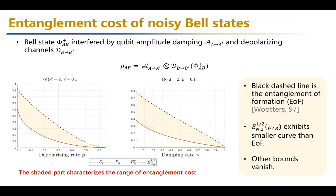Here is the first example: noisy Bell states under amplitude damping and depolarizing noise. Applying our bound and using previously known results, the dashed line shows entanglement of formation and the solid red line is our lower bound for entanglement cost, while the blue curves are all previous upper bounds. Since previous bounds vanish for full-rank states, our lower bound characterizes the shaded range of the true entanglement cost of these noisy Bell states.